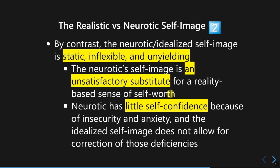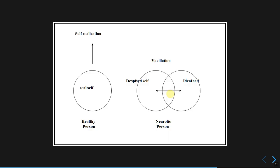The idealized self-image does not allow neurotics to correct the way they perceive themselves, which is why it remains static and inflexible compared to the realistic self-image. People with a healthy personality see themselves as an integration — a unity of both strengths and weaknesses — and what they see of themselves is an accurate depiction of their real selves.